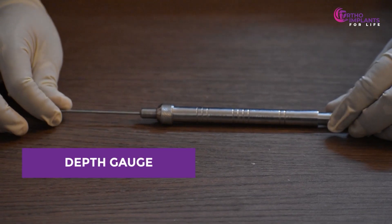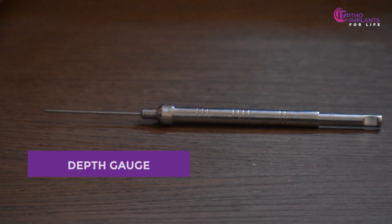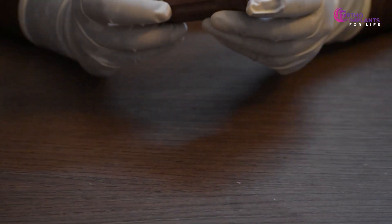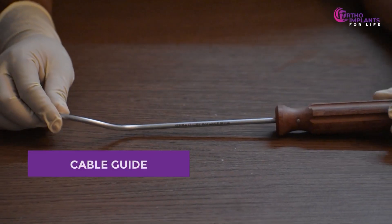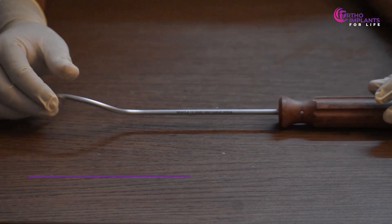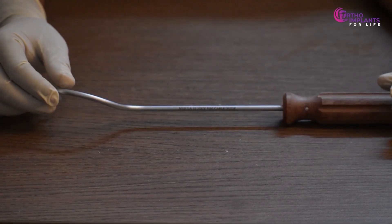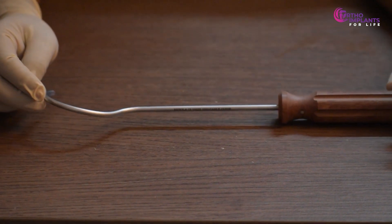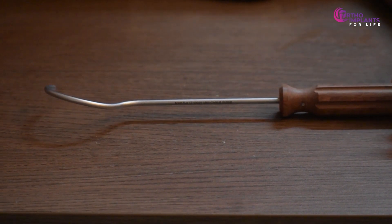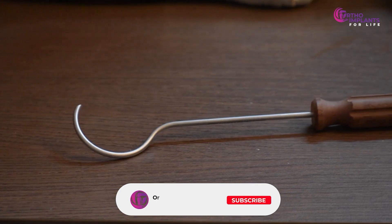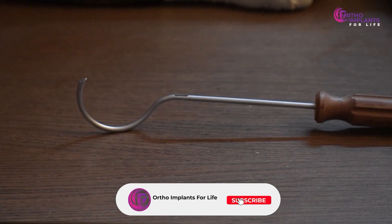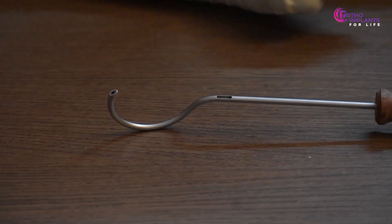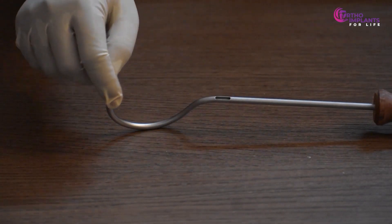This is called a depth gauge. Followed by the cable guide. This instrument is used to pass the cable around the bone and plate with ease. We use this hole in the stem area to pass the cable, and it comes out from this end right here.